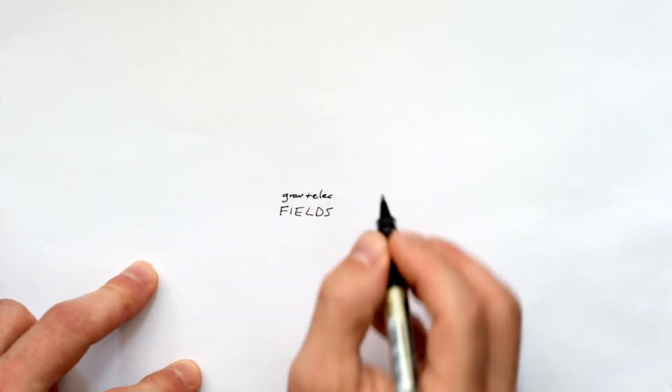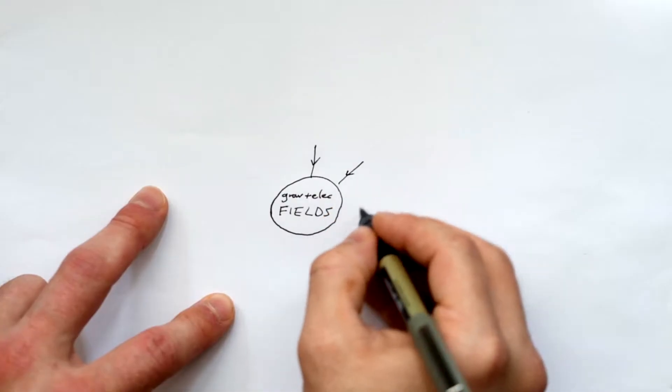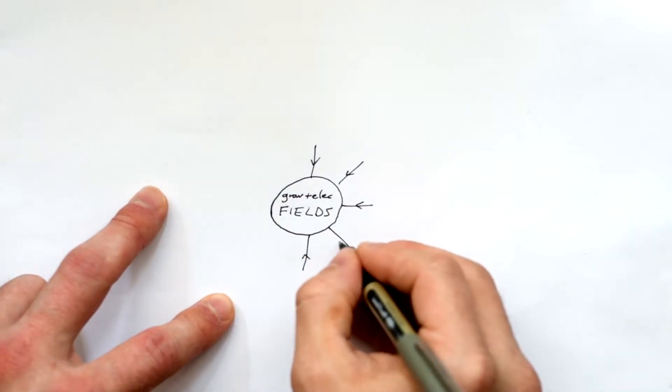Okay, so we're going to make a mind map for gravitational and electric fields, hopefully going to fit all on one A4 piece of paper. Don't forget that you can download the PDF from the link down below.